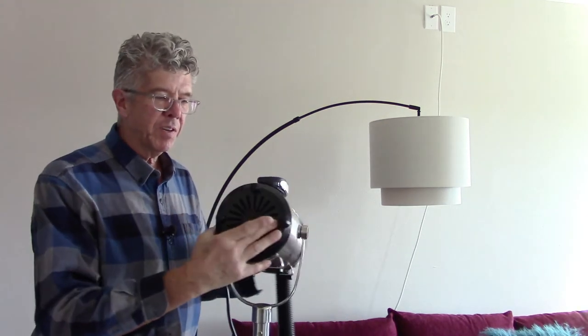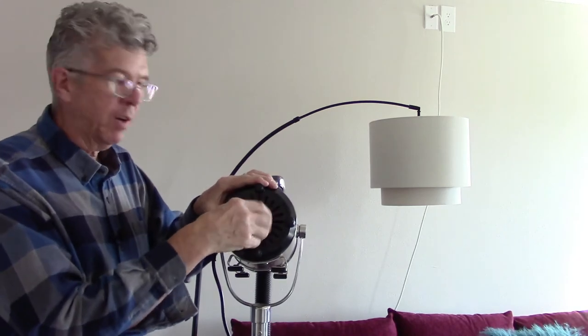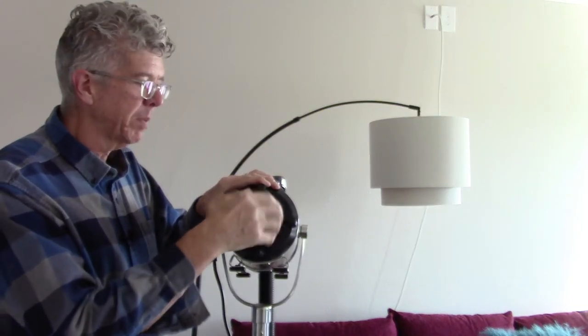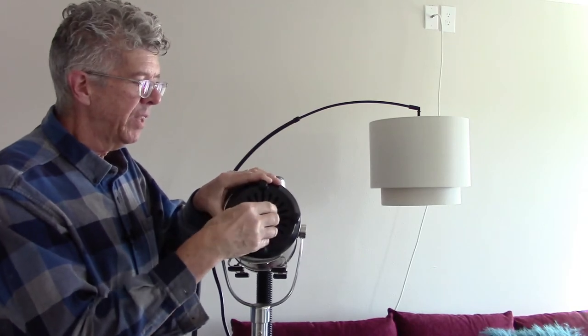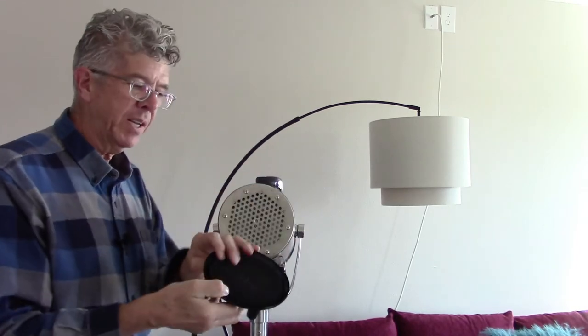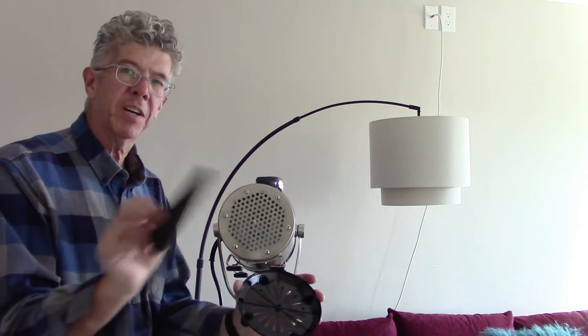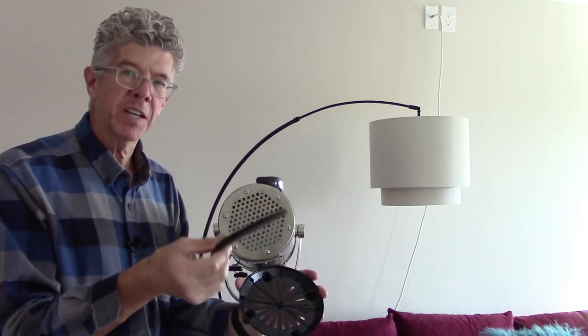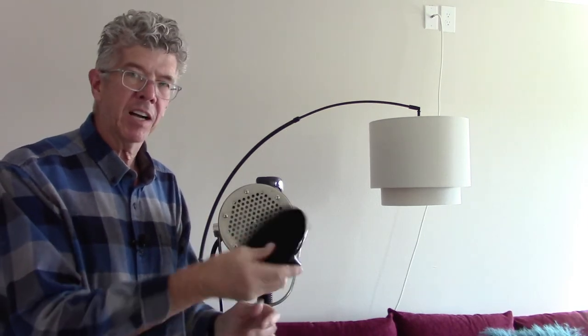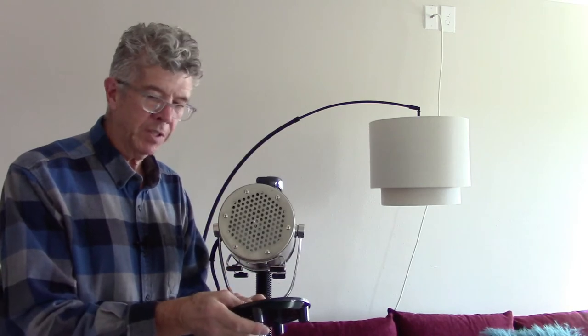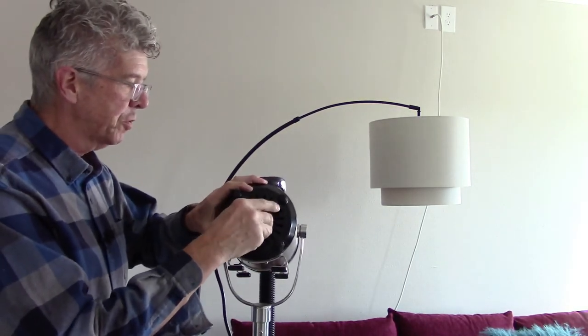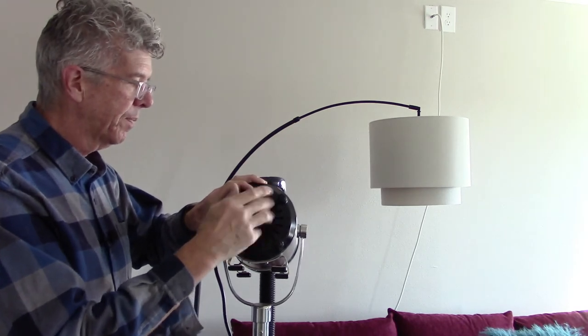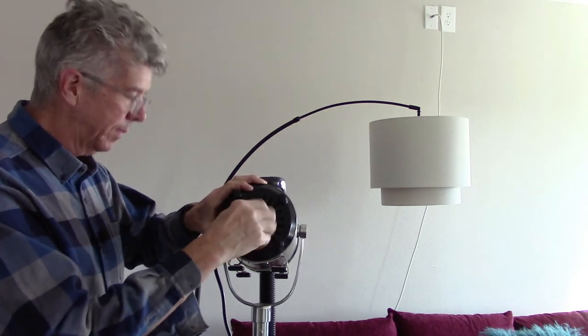Now on the back of the unit, there is a filter that you will need to clean probably fairly frequently. This just unscrews and then the foam filter is right here and it just peels right off. You can rinse this in water, let it air dry and then put it back on the unit. So once it's dry, just get the knob and put it back in and screw this on. And there you have it.